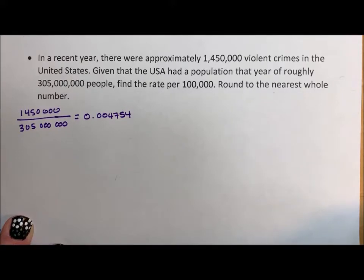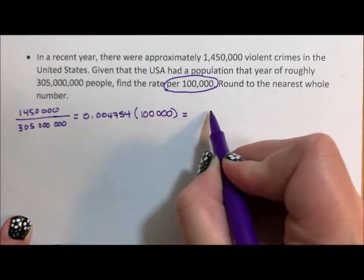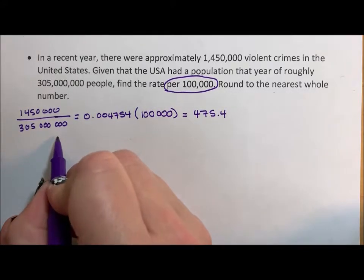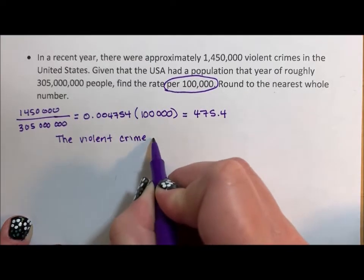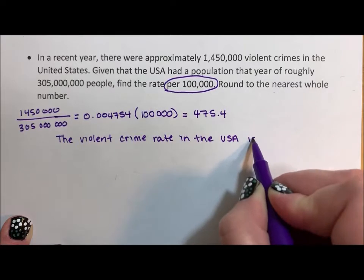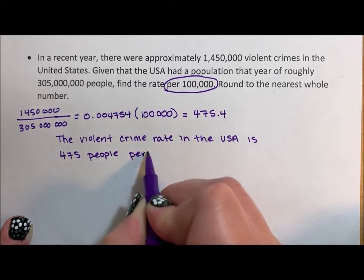So what we're going to do is take this per 100,000. That means we're going to take it out of a smaller sample size of people. We're going to multiply this by 100,000. And what we end up with is 475.4. It says round to the nearest whole number because there's no such thing as a part of a person — we don't have 0.4 of a person. So the violent crime rate in the U.S. is 475 people per 100,000 people.